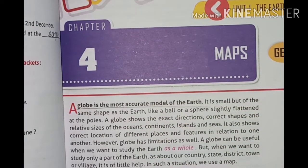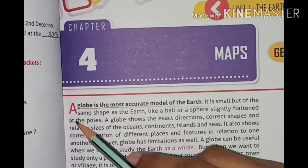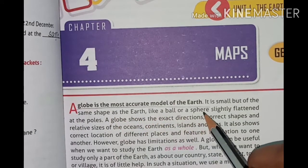What do you mean by Maps? Let us start the chapter from the Globe. What do you mean by Globe? A Globe is the most accurate model of the Earth.